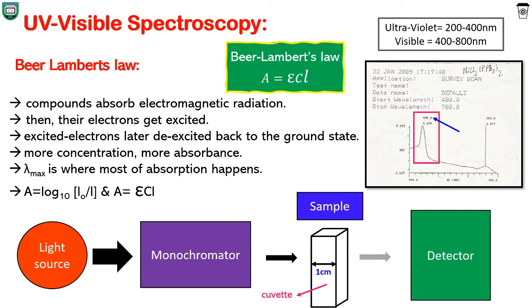Beer-Lambert's law is like a principle to UV visible spectroscopy. Certain compounds absorb UV visible radiation and that energy is used in the excitation of electrons from the ground state to the excited state. The remaining light energy is transmitted or released. Beer-Lambert's law states that as the concentration of a solution increases, its absorbance also increases, or the amount of light absorbed by a solution is directly proportional to its concentration.